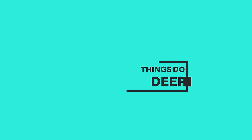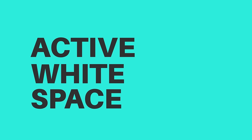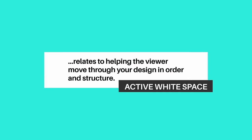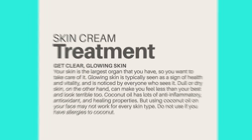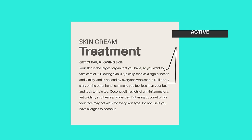Things go deeper than just macro and micro white space — we can enhance designs with passive and active white space. Passive white space refers to micro white space that helps legibility and aesthetics without guiding the viewer in terms of structure or viewing order. Active white space helps the viewer move through your design in order and structure. Looking at an example paragraph with poor micro white space, it's barely legible, but adding passive white space makes it properly readable and gives the viewer a more pleasant experience.